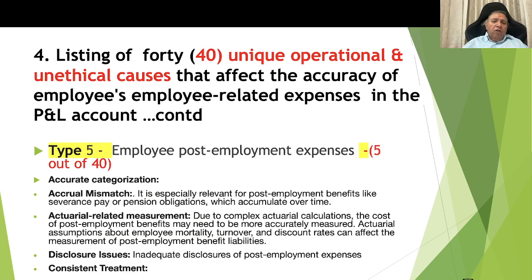Type 5, employee post-employment expenses: there are 5 causes. One is accurate categorization. Two is accrual mismatch, especially relevant for post-employment benefits like severance pay or pension obligations which accumulate over time — pension is primarily applicable in the public or government sector. Three is actuarial measurements: due to complex actuarial calculations, the cost of post-employment benefits may need to be more accurately measured. Actuarial assumptions about employee mortality, turnover, and discount rates can affect the measurement of post-employment benefit liabilities and must be fully supported. Four is disclosure issues: inadequate disclosure of post-employment expenses in the P&L account. Five is consistent treatment.